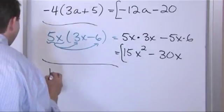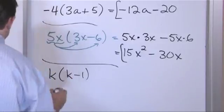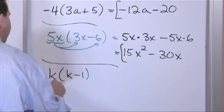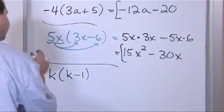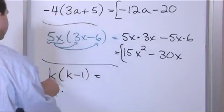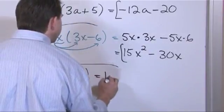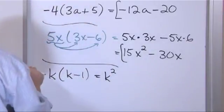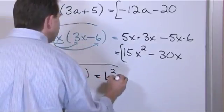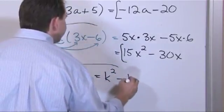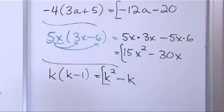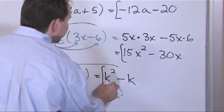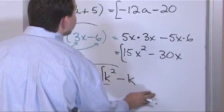What if we have k times (k minus 1)? We distribute k in. K times k gives us k squared because we add the exponents. K times negative one — don't forget the minus sign — is negative k. So we have k squared minus k. You might be tempted to add those but you can't because they're not like terms.